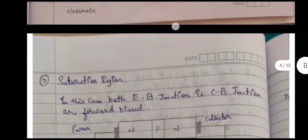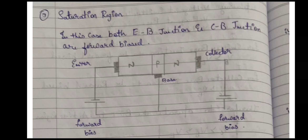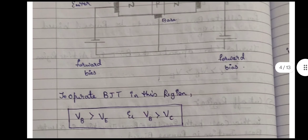The third type of region is the saturation region. In this case, both the emitter-base junction and the collector-base junction are forward biased. To operate the BJT in the saturation region, the voltage at the base junction should be greater than the voltage at the emitter junction, and the voltage at the base junction should also be greater than the voltage at the collector junction. This covers all the different types of regions we see in the BJT.